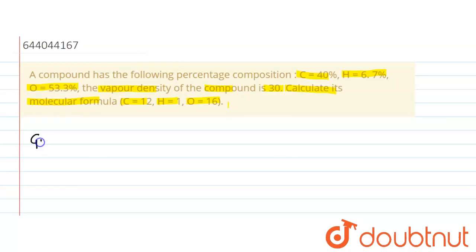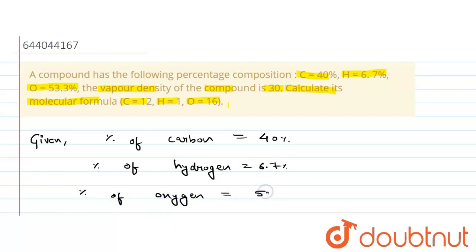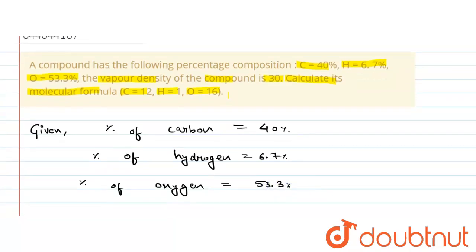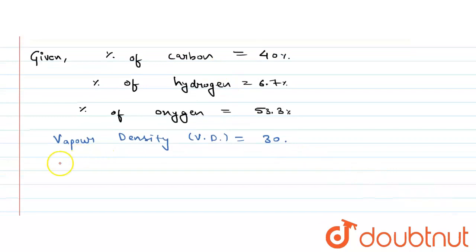Let's list down what is given to us. The percentage of carbon is given as 40%, the percentage of hydrogen is given as 6.7%, and the percentage of oxygen is given as 53.3%. Moreover, vapor density (VD) is given as 30.